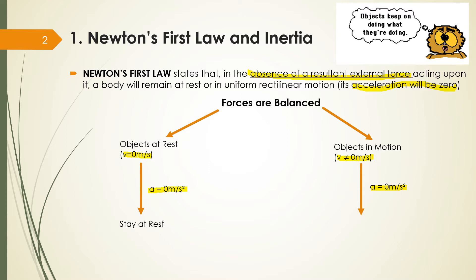If my acceleration is zero and I was at rest — my velocity was zero — I'm going to stay at rest. But if I'm in motion with any velocity that's not zero, but with the same velocity over and over, and I also don't have acceleration, I'm going to stay in motion with the same speed and same direction. So Newton's first law is not just the law that says I'm not moving. I can be moving but not accelerating, or I can be at rest not moving at all.